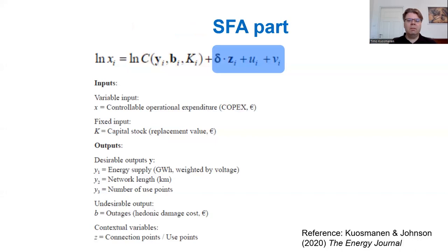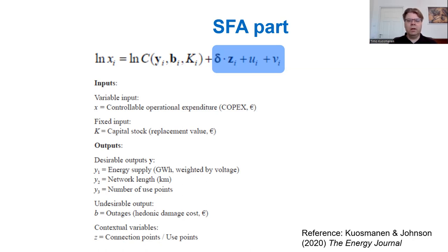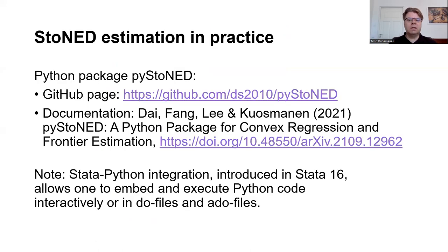We also include elements from parametric regression analysis. The blue part, what I would call the SFA-inspired part, includes a parametric component which we use for modeling contextual variables. We also have a composite error term that includes both inefficiency and noise. If you're interested in trying the estimation, we have recently published a Python package that is freely available from GitHub.